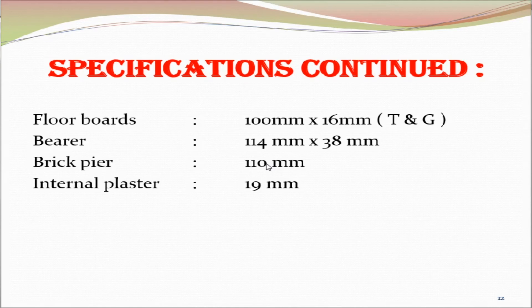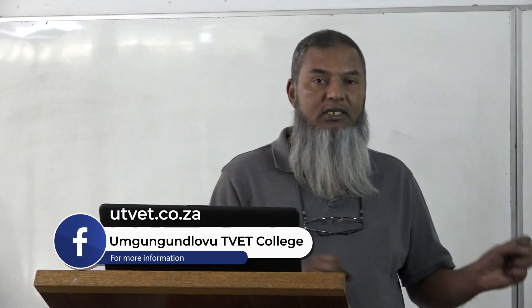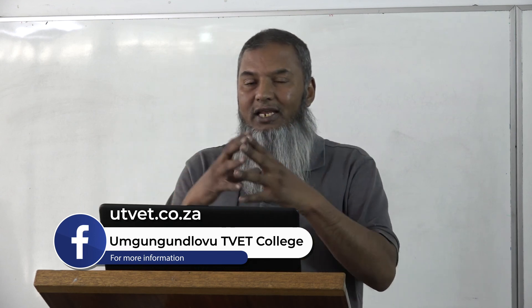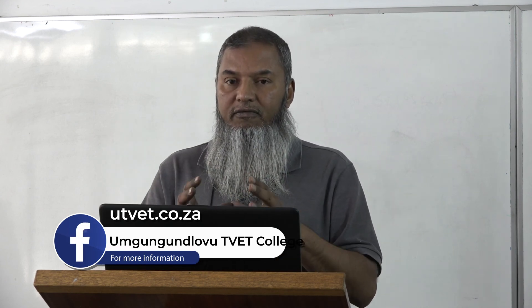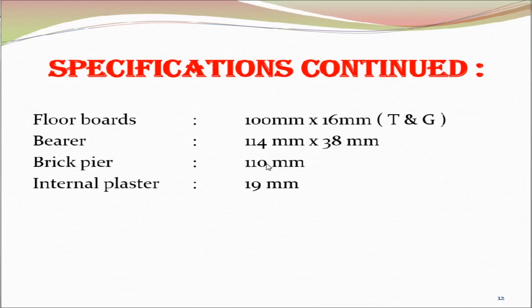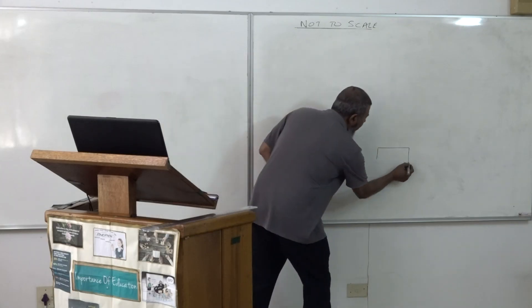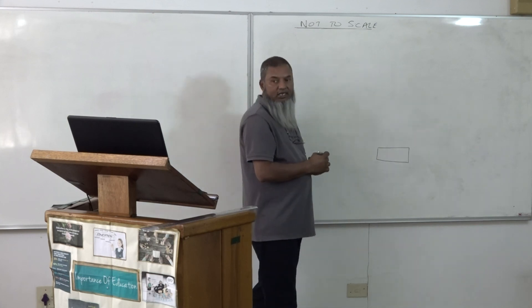The specifications again: Foundation wall, 990 by 440. Foundation wall, 330 millimeters, five courses high. External wall, 220. Hard core, 150. Concrete slab, 150. Screed, 50. Sleeper wall, 220 millimeters. Wall plate, 114 by 38. Floor joist, 114 by 38. Floor boards, 100 by 16. Bearer, 114 by 38. Your brick pier is 110. Your internal plaster is 19 millimeters. Remember from what we have learnt, what we have covered, you need to apply that together and draw the following drawing that has been given to you. Now that you have received the specifications on the suspended wooden floor, practice that roughly. Remember, don't draw to scale. It's a rough sketch for understanding purposes. We start off with the foundation. The foundation is 990 by 440.